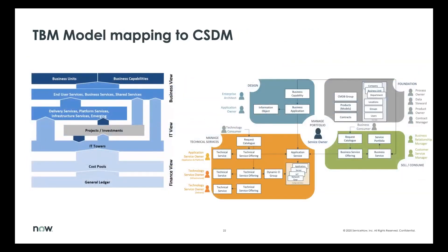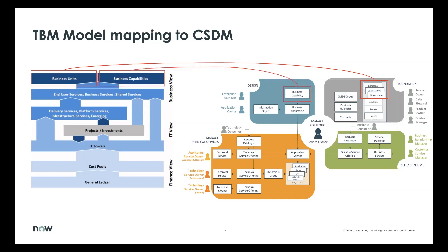How this maps to what we do in CSDM: the first thing that's really obvious from the top down is looking at the business unit and how that maps to the foundations domain in CSDM — that's almost a one-for-one mapping. We also have a very strong mapping on the business capability viewpoint. So as a common point of view, this is a good starting point for the mapping.